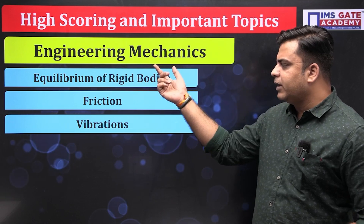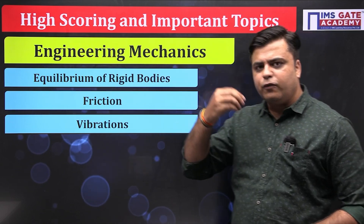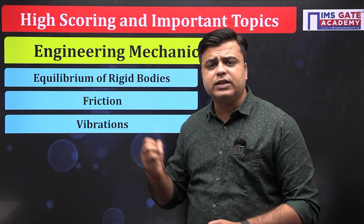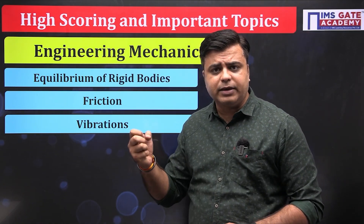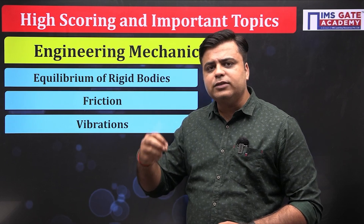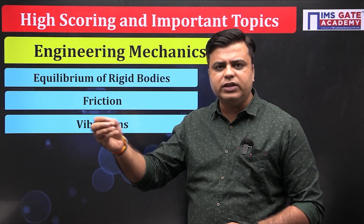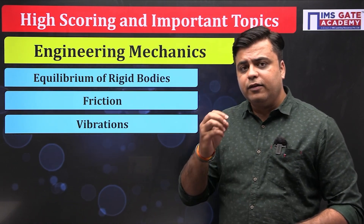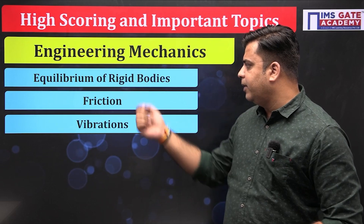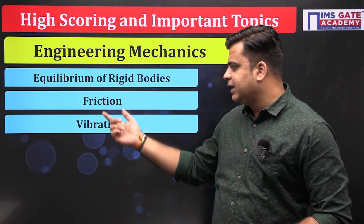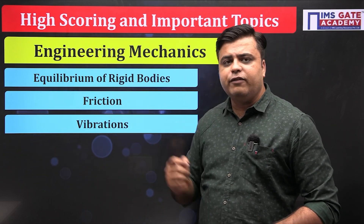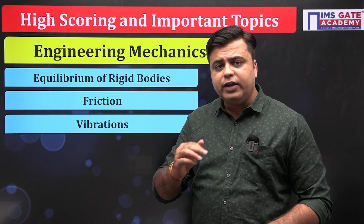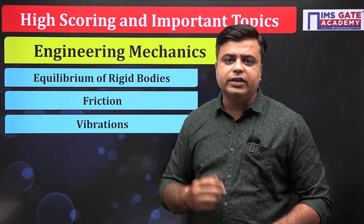For engineering mechanics, although fewer questions are asked for civil engineers compared to mechanical students, we can still see questions from equilibrium of rigid bodies, friction, and vibration — three key areas from where you can get a question in the examination.